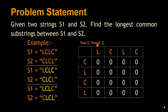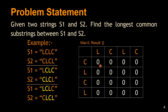We iterate through the algorithm row by row, and for each row we go through each column and compare the characters, updating the numbers accordingly. Initially, if it is the first row or the first column and there is a match between the characters, we increment the count to one.